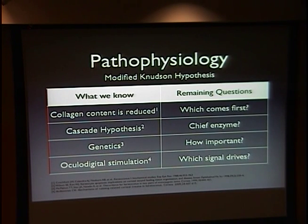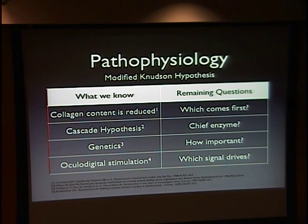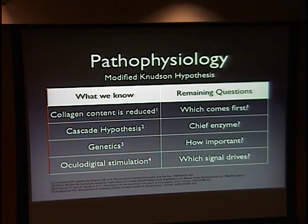Genetics plays a role both directly because of familial association — about 20% of patients with keratoconus will have a familial association. Certain other genetic conditions, for example trisomy 21, will predispose patients to oculodigital stimulation, which is another thing we know is associated with hydrops and keratoconus. There are certain inflammatory mediators that have been well described that lead to corneal thinning, but we don't know the hierarchy of any of these. We still have a lot of questions to answer.